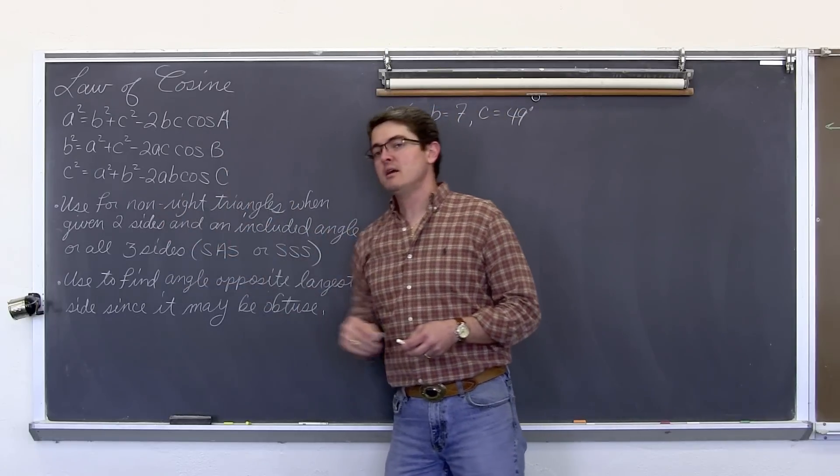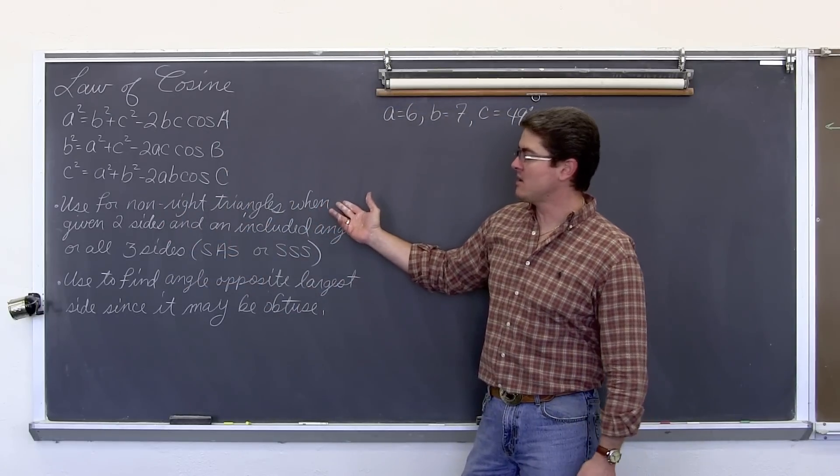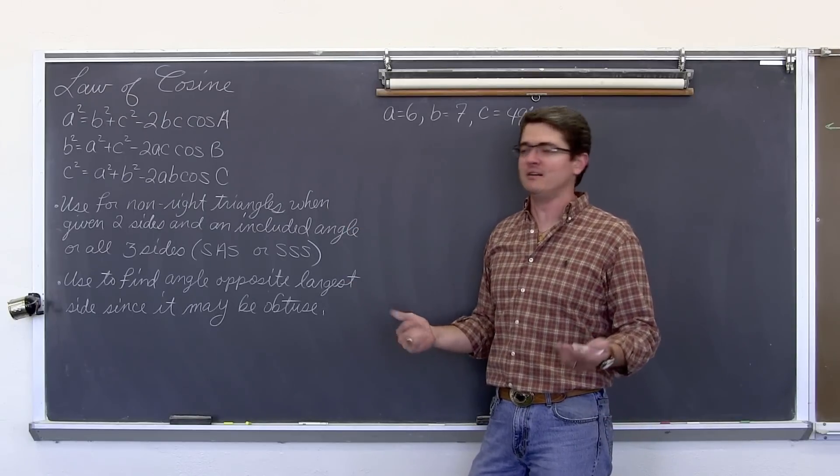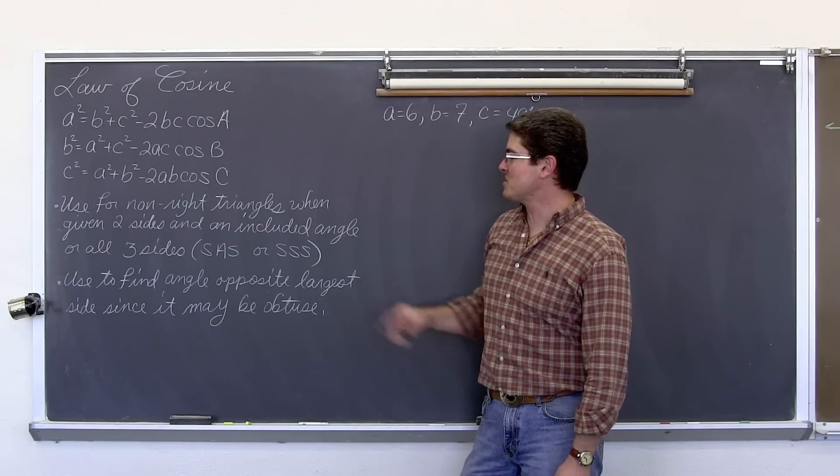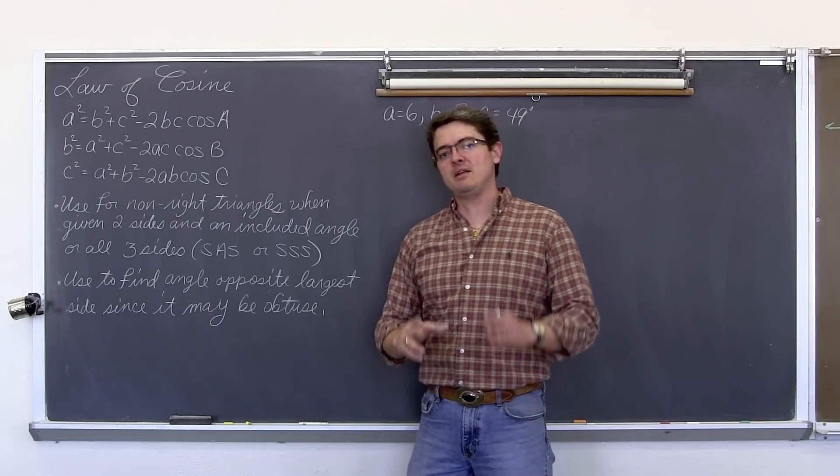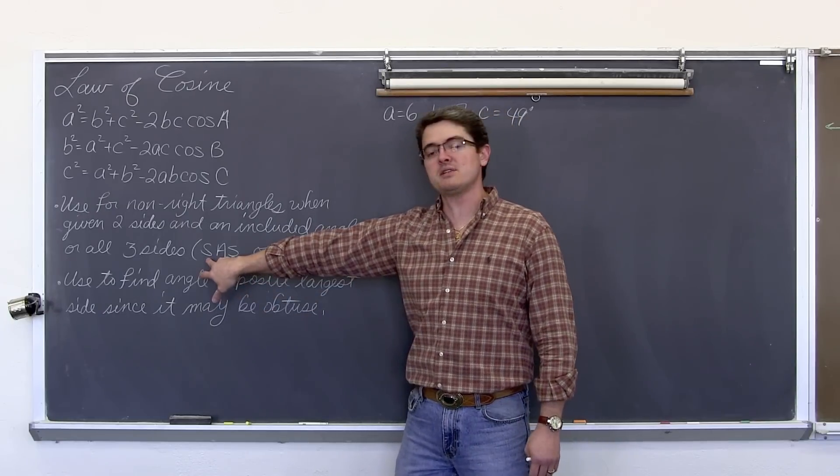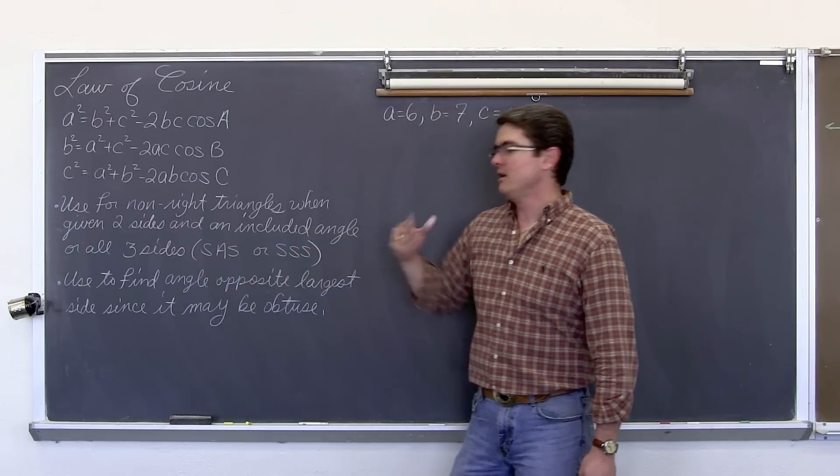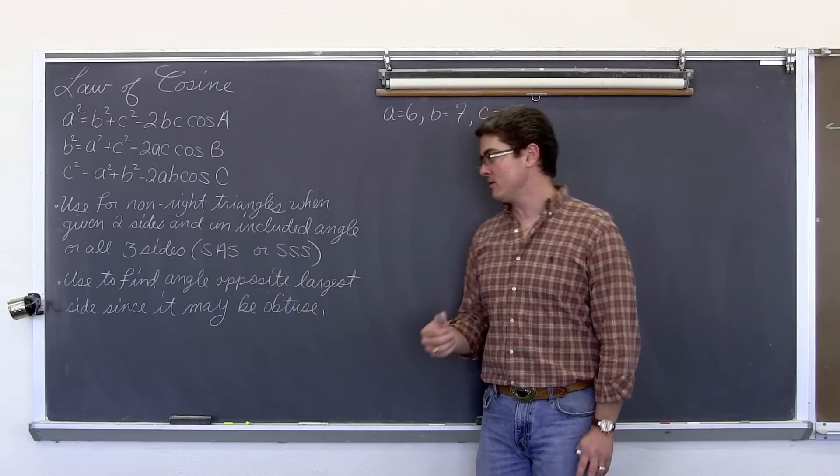When do you use these? You use these for non-right triangles because if they are right triangles then why not just go back to a succotant when given two sides and an included angle. That means that you are going to know two sides of the triangle and they are going to come together to form a particular angle. Or you are just given all three sides of the triangle.